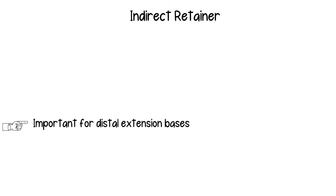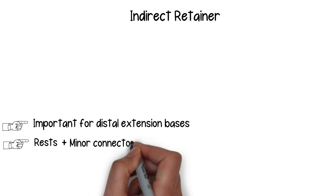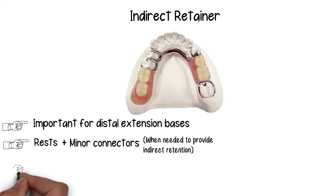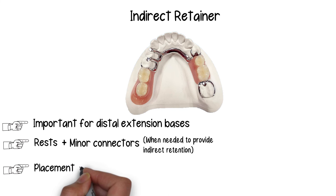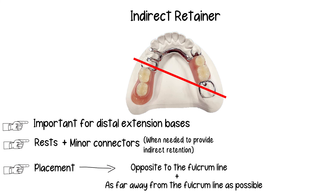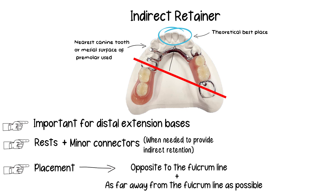In cases with distal extension, use of an indirect retainer becomes extremely important to avoid dislodgement and rotation around the fulcrum line. An indirect retainer is not a specific component — it is any component that can serve the function of indirect retention. When indirect retention must be deliberately provided, it can consist of one or more occlusal rests and supporting minor connectors. An indirect retainer should be placed opposite to the fulcrum line, as far from the distal extension base as possible. Ideally near the incisor teeth, but if those are not strong enough, the nearest canine or mesial surface of the first premolar may be used. If possible, two indirect retainers should be used to compensate for the compromised distance.